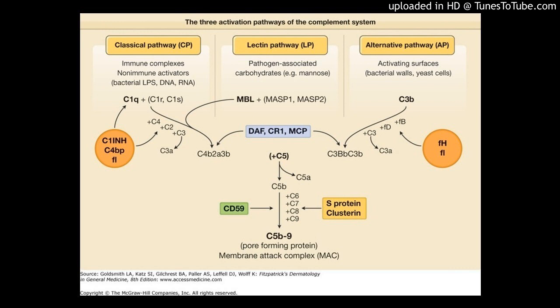Results: Compared with the control group (A595 = 1.764 ± 0.026), IDR-1018 significantly damaged the mature MRSA biofilm, and the effect was dose-dependent. With decreasing drug concentration, the destruction of the biofilm decreased correspondingly. When the concentration was as low as 15 mg/L, A595 = 0.946 ± 0.047, T = 32.955, P < 0.01.